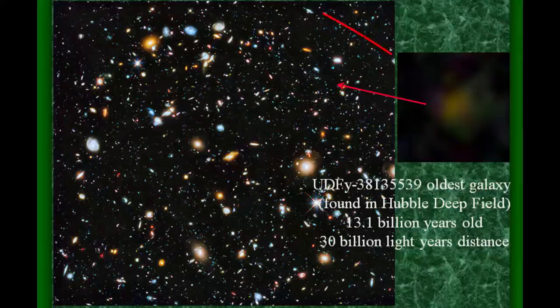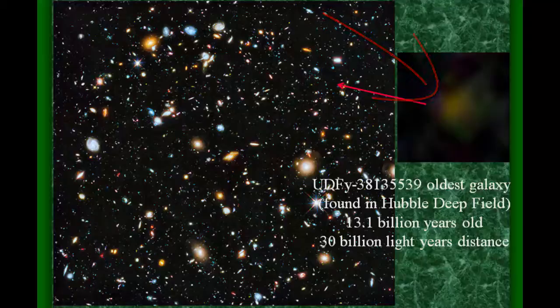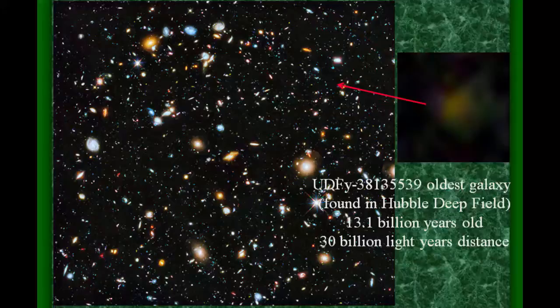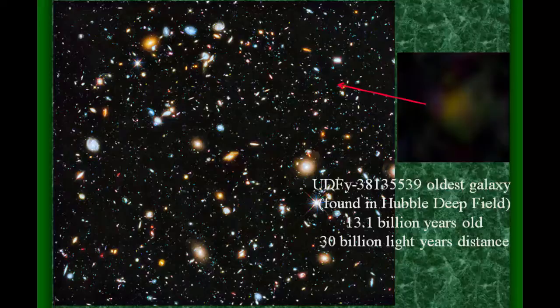We're looking at a faint galaxy here from the Hubble Deep Field, which was a picture that Hubble took of the farthest distance most galaxies. And you're looking at a galaxy that's 13.1 billion years old. And if you tried to measure where that galaxy is today, well, it's 30 billion light years distance from us now.